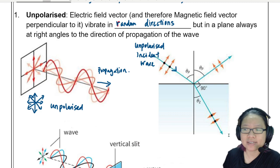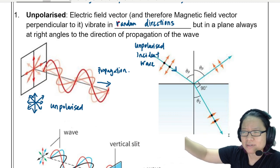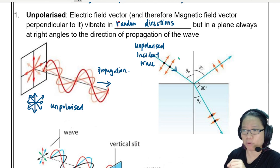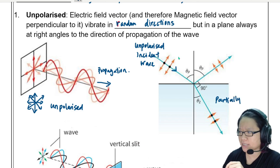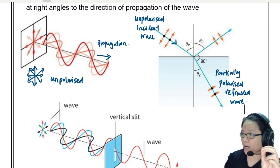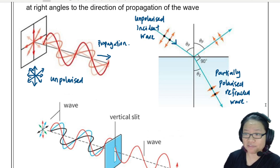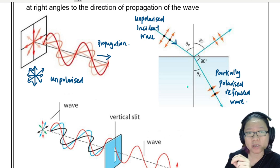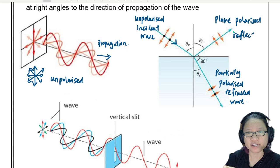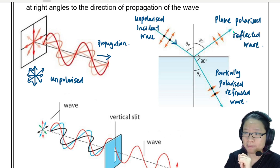Refraction is an IGCSE or year 11 syllabus topic, so we're not going to talk too much about this. The ray going in is partially polarized. You may be thinking - what exactly is a partially polarized reflected wave? To understand partial polarization, you first need to know what is fully plane polarized. Depending on the type of glass, sometimes when reflection happens you will get a plane polarized reflected beam or wave.